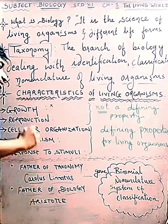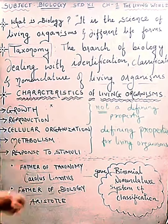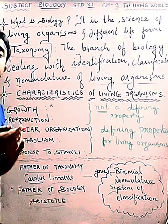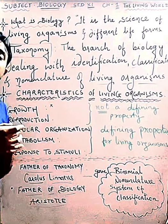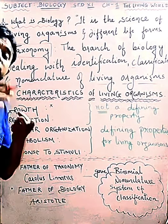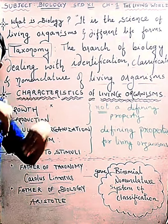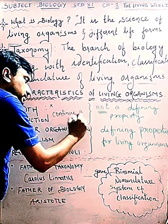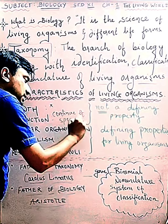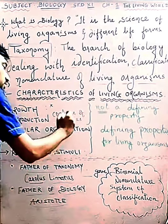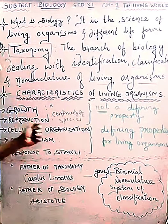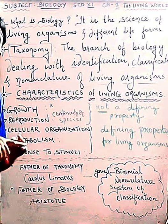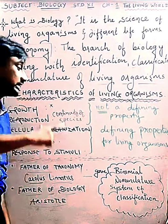The next characteristic of living organisms is reproduction. Reproduction is the process by which an organism produces an offspring of its own kind. For the continuity of species, reproduction is very important. However, reproduction also cannot define a living organism on its own.